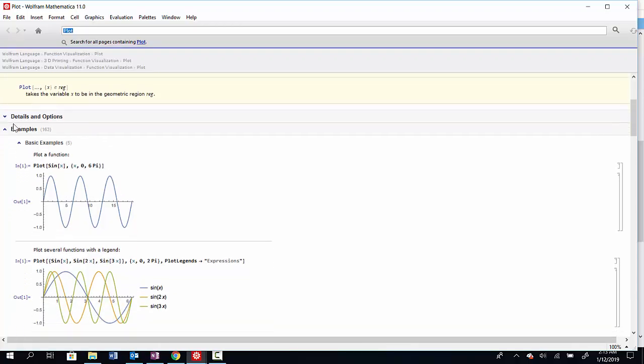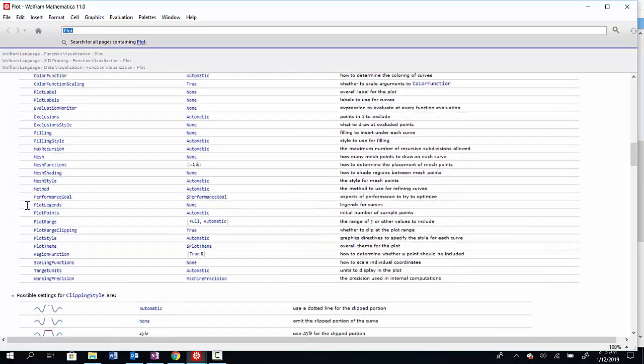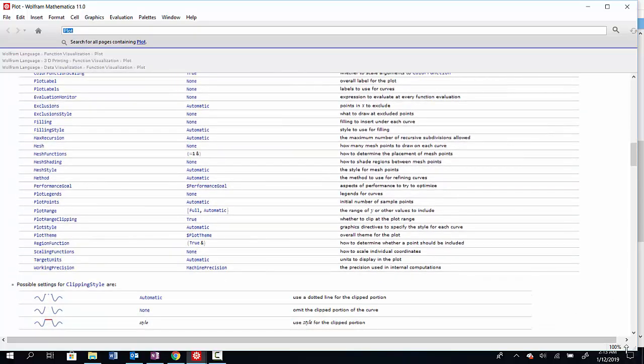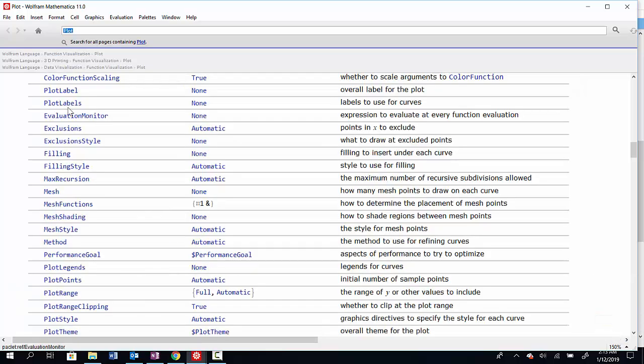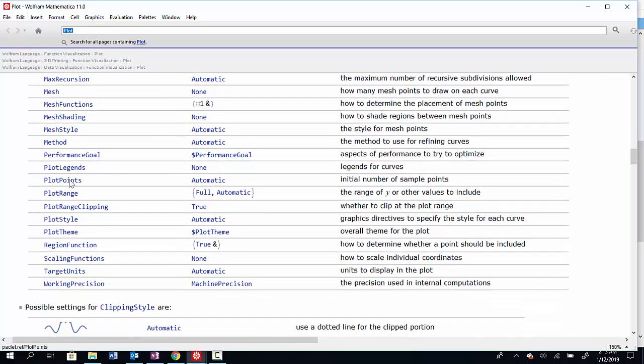Now there's lots of ways I can get to the options here. I can go to details and options, and I can see a big list of all the special options that I can use for this function. What you can see is there's lots of different options I can modify. And all these options are Mathematica commands. So if I want to use any of them, I can always go to their individual help as well.